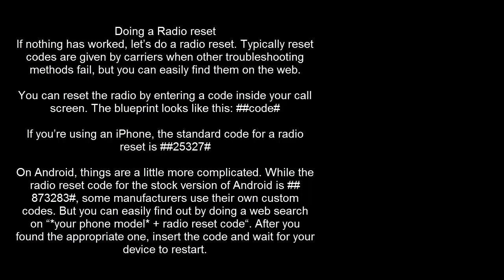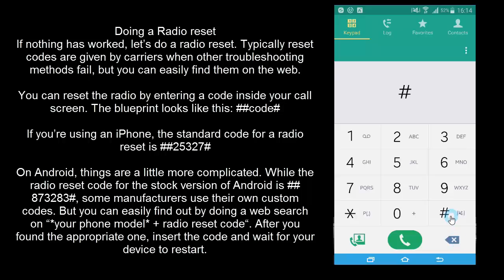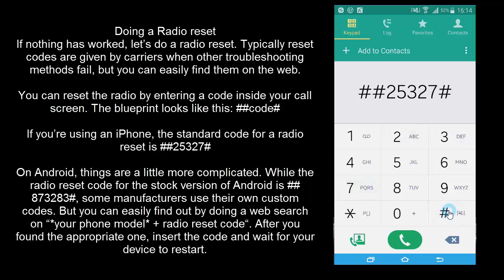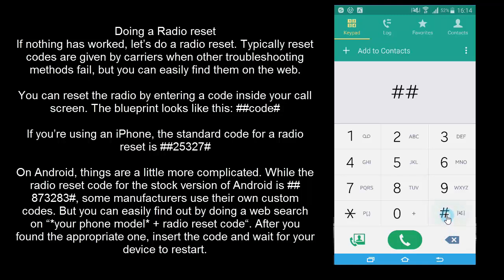You can also go for a radio reset, which can vary from device to device. Search for your phone model along with the string 'radio reset code'. Normally the code for iPhone is ##2532727## and for stock Android it is ##8732832##. For Sony, Samsung, or other manufacturers the code may differ, so search for your model. Just dial that in your dialing pad, press dial, and that will reset your radio.